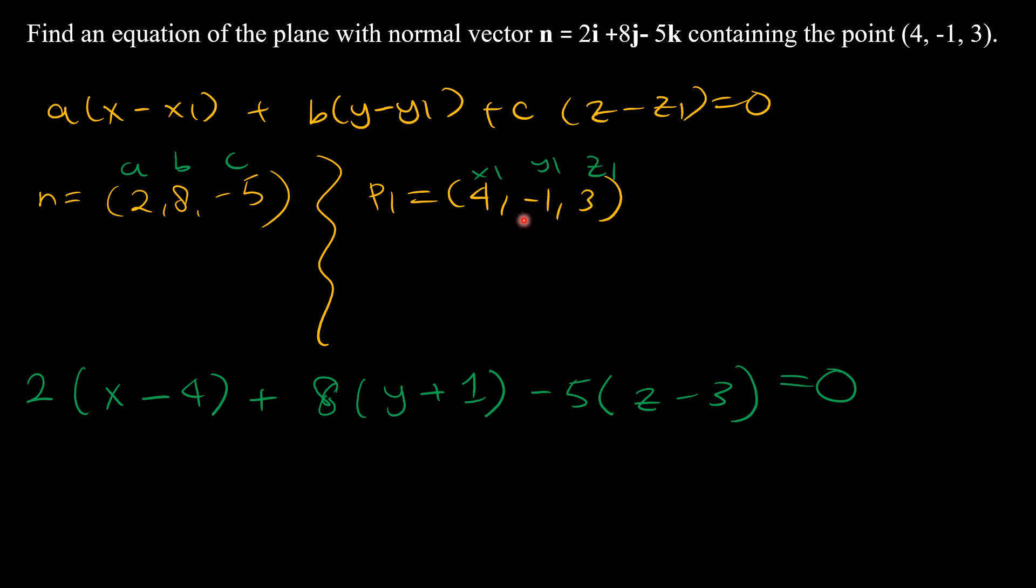y1 is negative 1, but it's already negative. So we write y negative negative 1, which gives positive. So that's why I wrote positive 1. And here it's negative 5, so c times z minus z1. c is negative 5, and z1 is 3, so negative 3. So this is simply the equation of this plane.